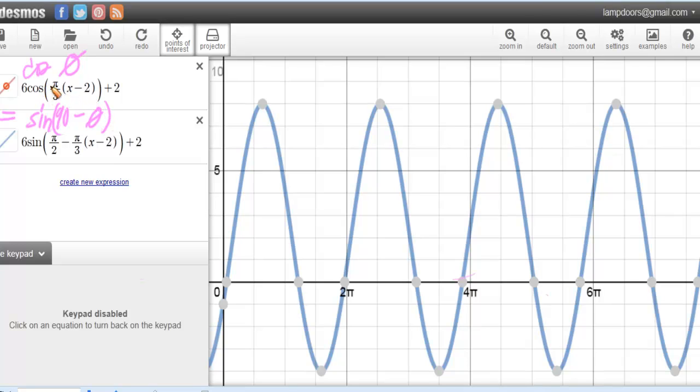So I took exactly the same equation that I had at the top and I rewrote it with a sine by just changing the angle, or the argument, into 90 minus the argument. Well, that's not 90, though—since we're dealing with radians, it's π/2.